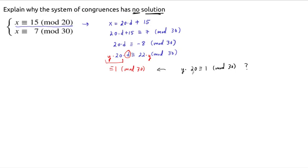So, can we find a y, such that y times 20 is congruent to 1 mod 30? And the answer is no. No such thing exists. And that's because 20 is a zero divisor mod 30.